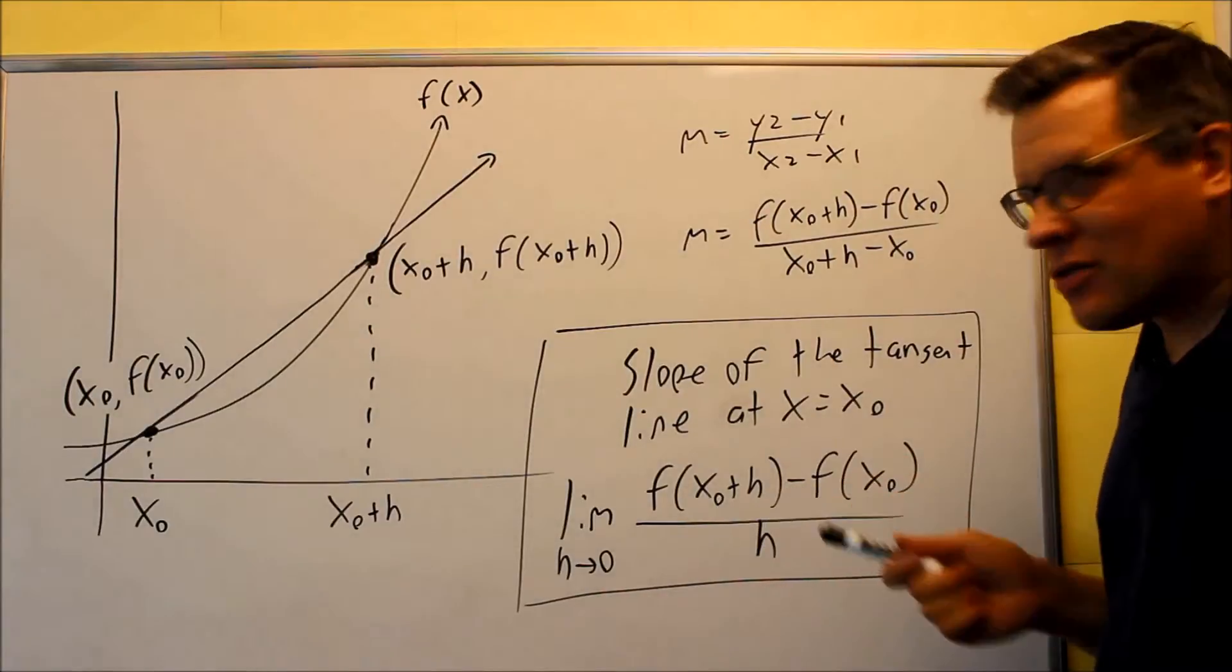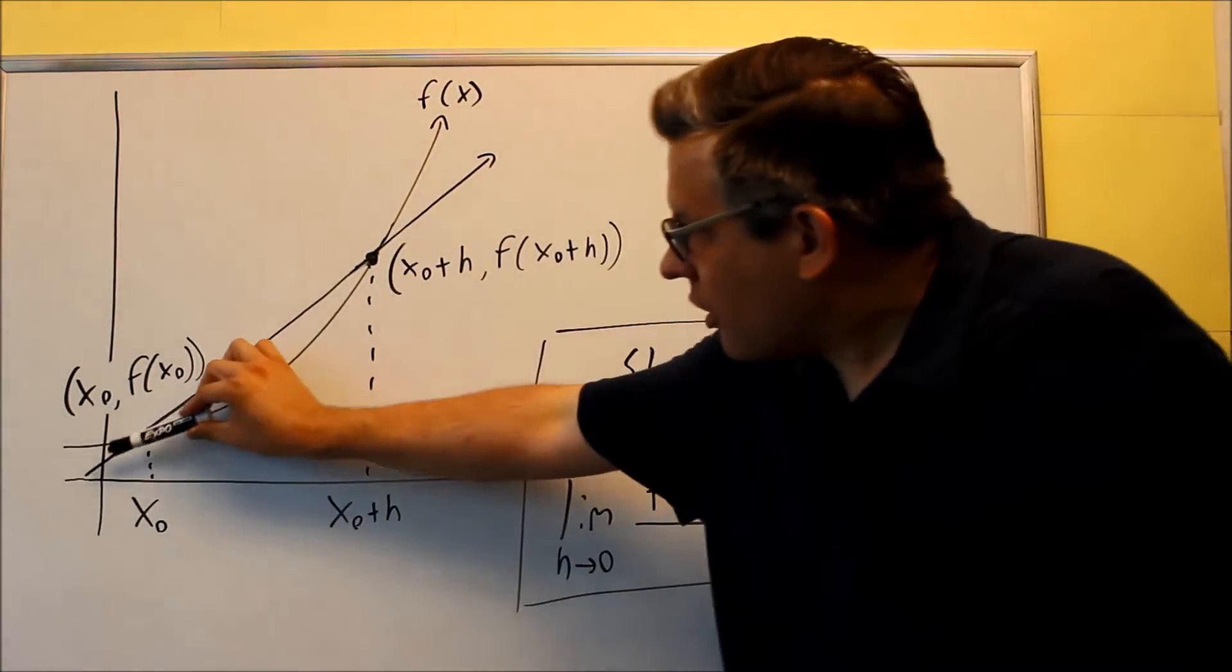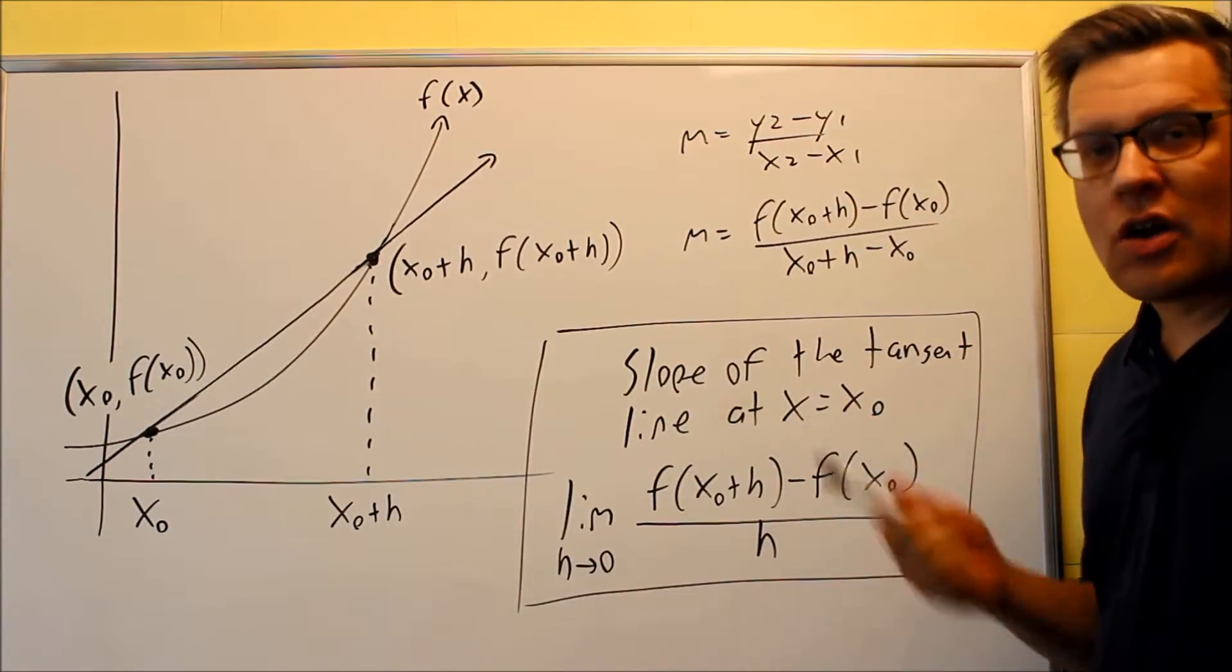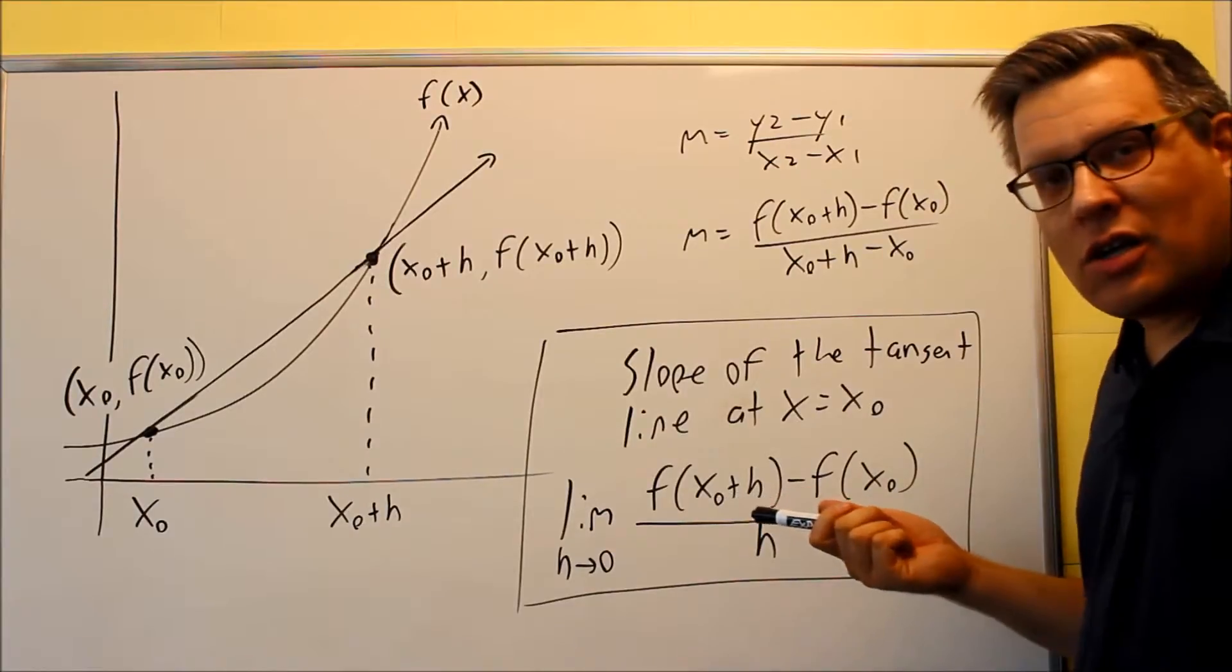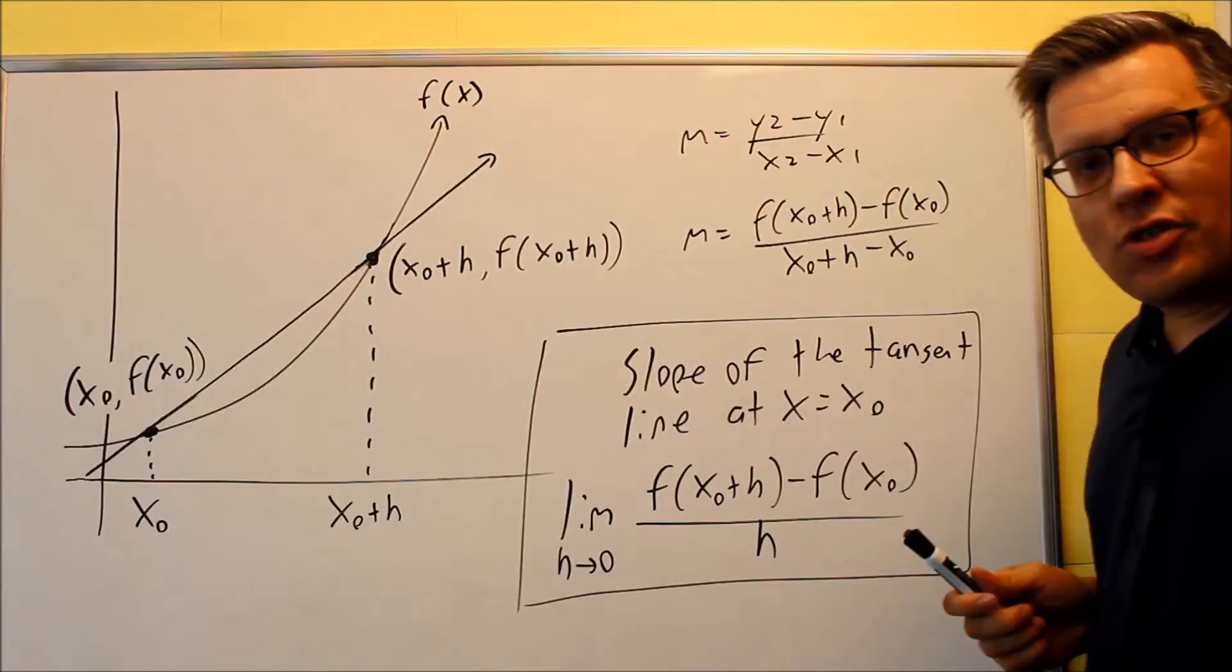So this formula in the box is a way to find the slope of the tangent line. So the tangent line, again, would be a line that touches the point once at the value of x equals x sub zero. It's also the same thing as saying we want to find the slope of the curved line at x sub zero.